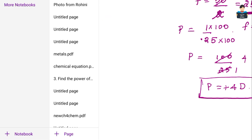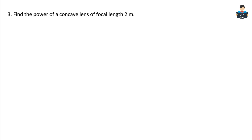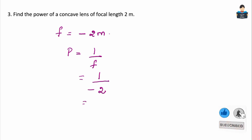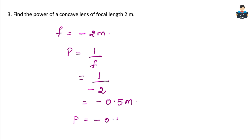Question 3: Find the power of a concave lens of focal length 2 meters. Since it is a concave lens, f = minus 2 m. Using the formula P = 1/f: P = 1/(minus 2) = minus 0.5 diopter. The power of the concave lens is minus 0.5 D.